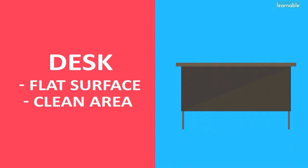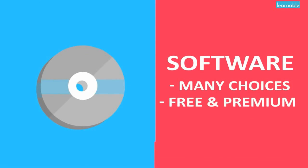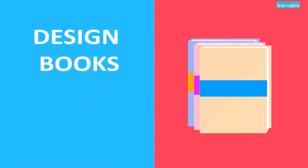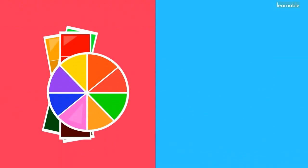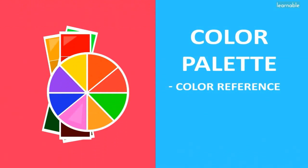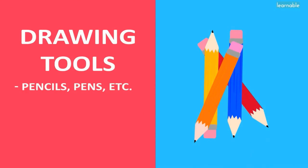You'll definitely need yourself a good workspace — a large desk or a flat surface that is clean is important for a designer. You'll also want to make sure that you have yourself some design software; this is a must if you plan on being successful. The software you choose is solely up to you, but there are many to choose from, including free and premium options. When starting out, it will also be helpful to have at least one design-oriented book on hand to use as a guide or for reference. While you might not need one right away, you'll definitely want to have a color palette set or a generator. Last but not least, you need drawing utensils — this can be anything from pencils to markers to pens, or whatever you prefer.